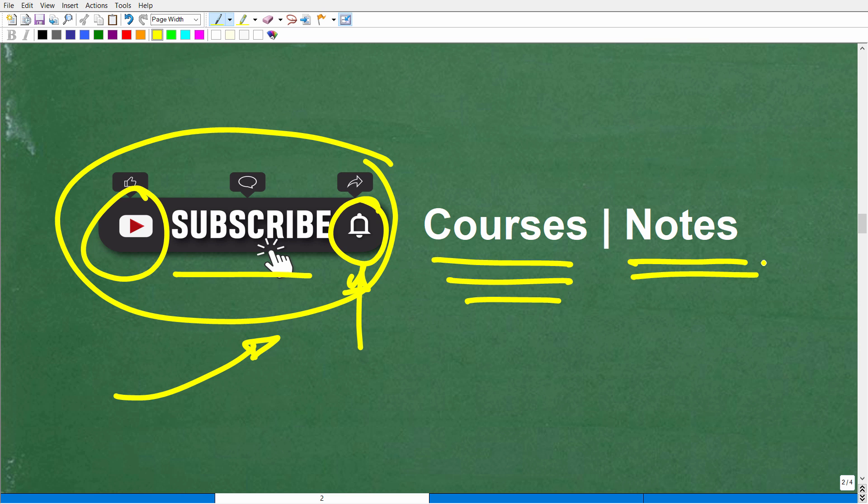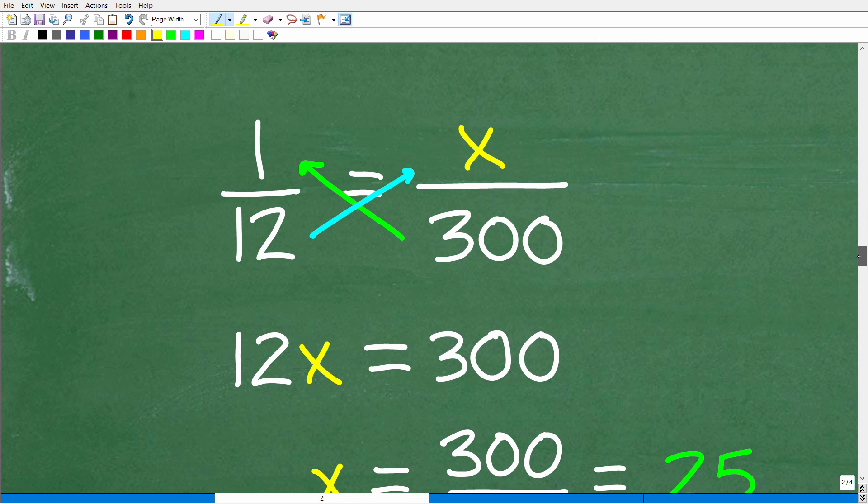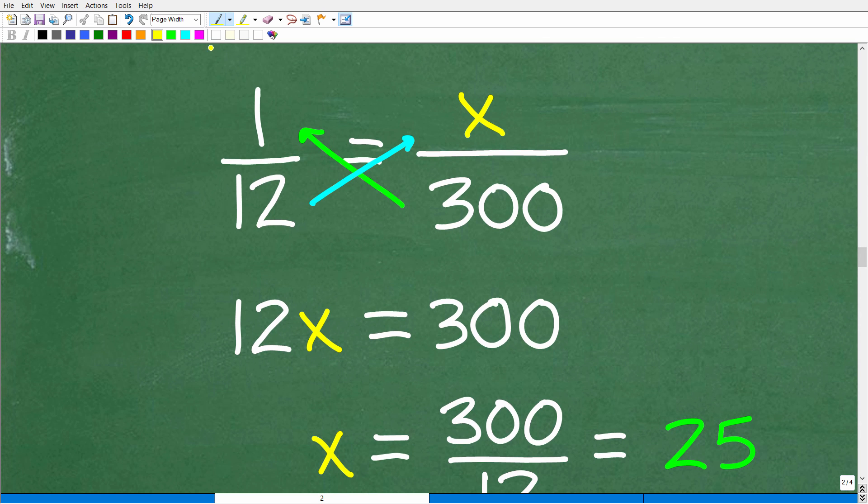Let's get back to this problem because all we need to do is solve this proportion. We have a gear ratio of 1 to 12. The big gear is going to turn one time for every 12 times the small gear is going to turn. We're looking for how many times the big gear is going to turn if that small gear turns 300 times.